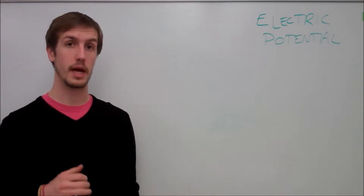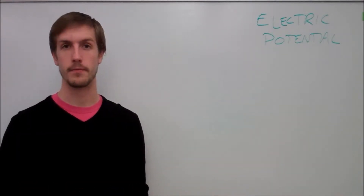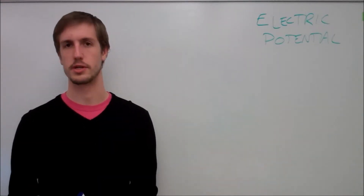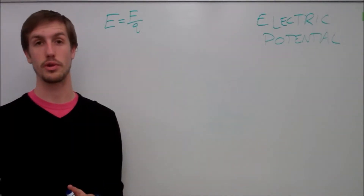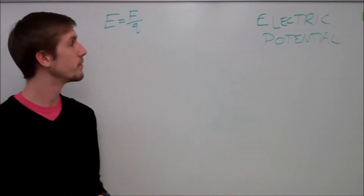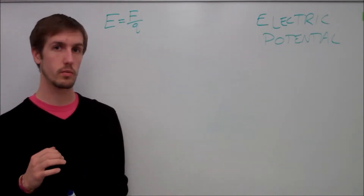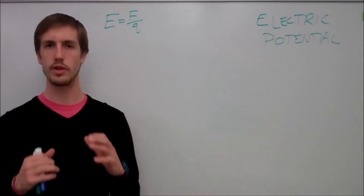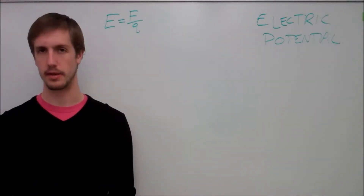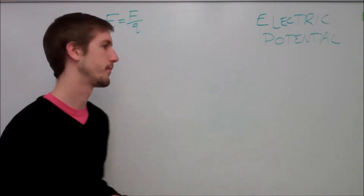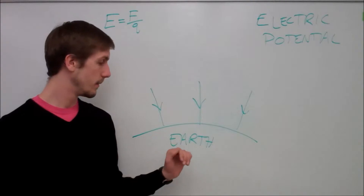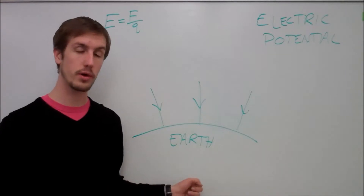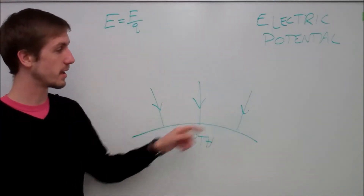What we realized from our electric field video is that the electric field is equal to force per test point charge, or E = F/Q. And when we related it back to gravitational fields, we drew the Earth and we drew gravitational field lines, which looked similar to this. Our charged particle — which right now would be the Earth — has all the field lines directed towards the center of the Earth, and that's what all of these arrows are showing.